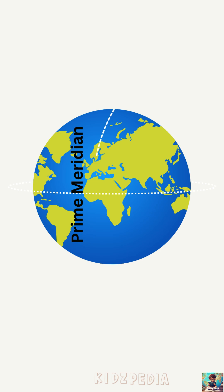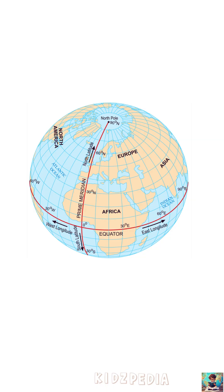The prime meridian is an imaginary line that is marked as zero degree longitude. It's also called the Greenwich meridian, because in 1884 many countries agreed to use the line passing through Greenwich, a place in London, England, as the starting point for measuring longitude. This line helps us know how far east or west a place is from the prime meridian.